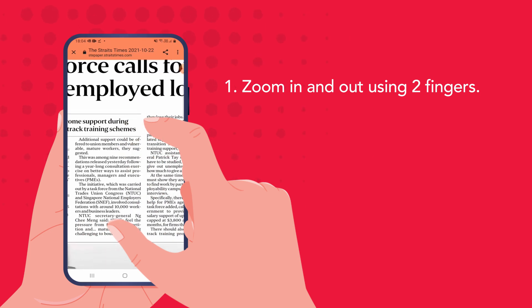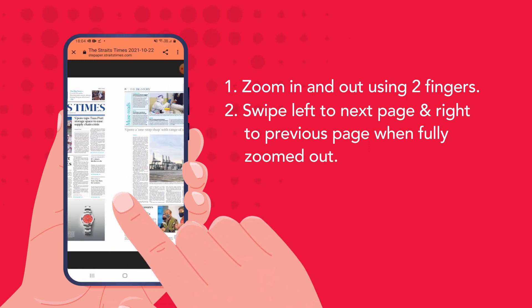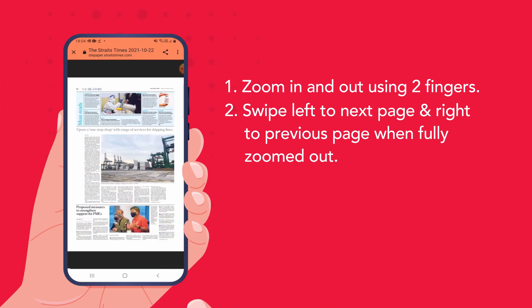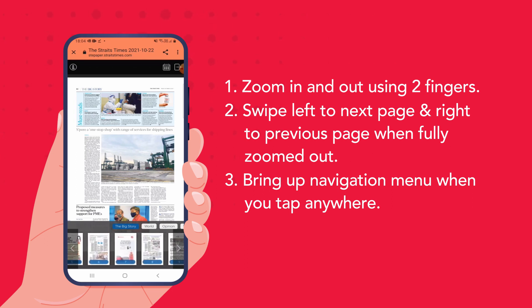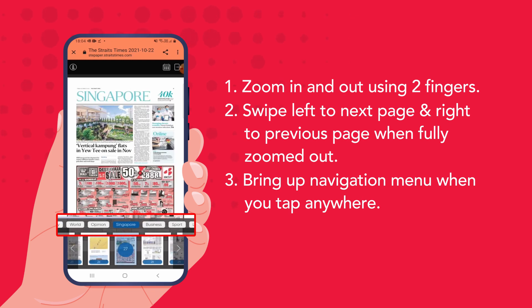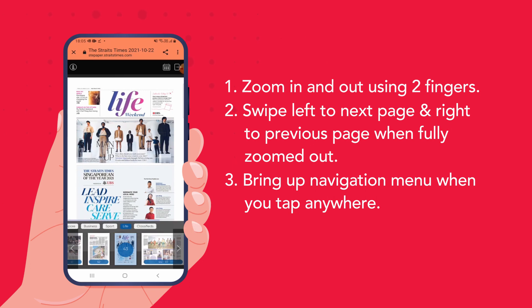When I am fully zoomed out, I can swipe to the left to go to the next page or right to go to the previous page. If I tap anywhere, I can bring up the navigation menu where I can easily skip to certain sections or pages in the newspaper. For example, I can easily go to the Singapore section, or I can choose the Sports or Life section. I can also select the pages that I want to read directly.